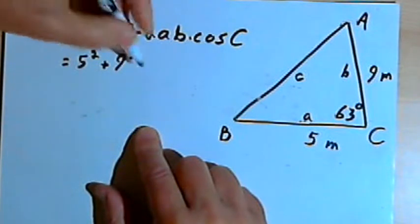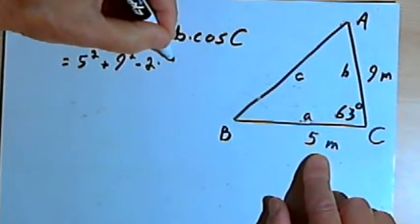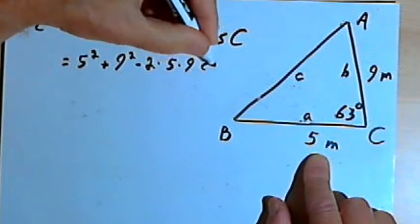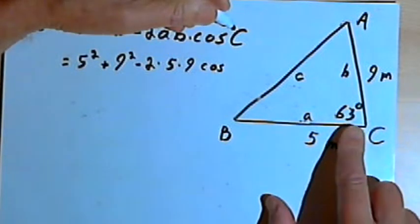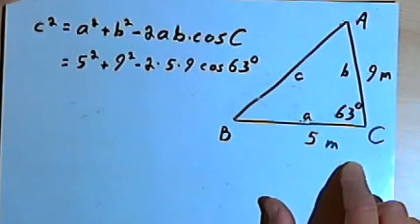So that's 9-squared, minus 2 times a, which is 5, times b, which is 9, times the cosine of c, and the cosine of c is 63 degrees.